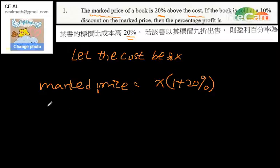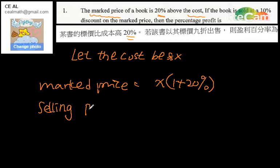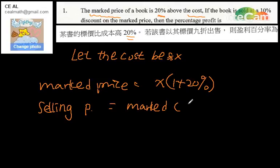And then, with a 10% discount, it means the selling price is equal to the marked price multiplied by 1 minus 10%.